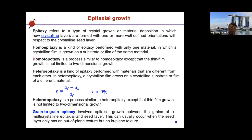People have also mentioned homoepitaxy where thin film growth is not limited to two-dimensional growth — it can also be three-dimensional (island growth). In practice we do not distinguish these two, we simply call it homoepitaxy. Heteroepitaxy is epitaxy performed with materials that are different from each other — a thin film grows on a crystalline substrate of a different material. In this case, lattice mismatch is introduced. The definition of lattice mismatch is: (lattice constant of film minus lattice constant of substrate) divided by lattice constant of film. To maintain heteroepitaxy growth, the lattice mismatch should be smaller than 9%.